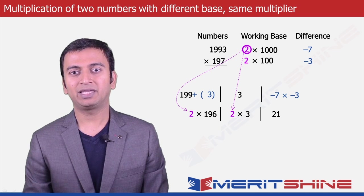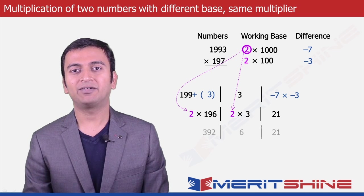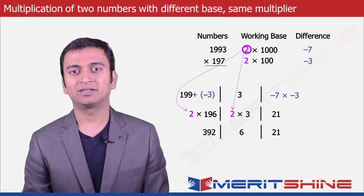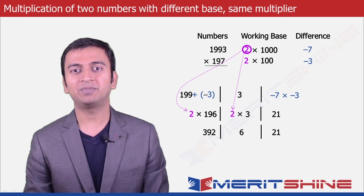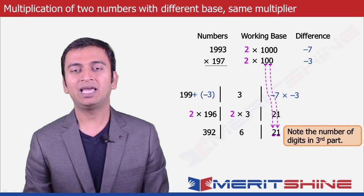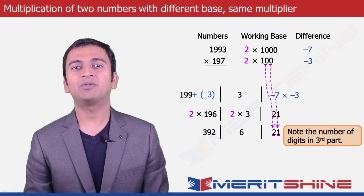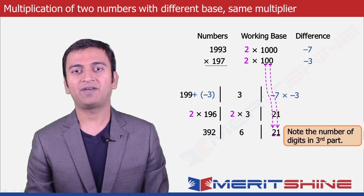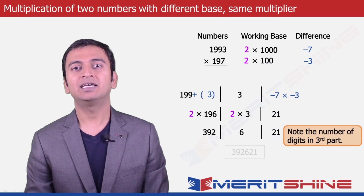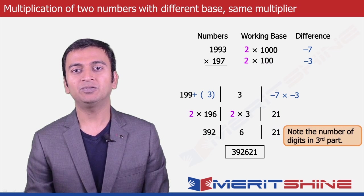We can now club these and get our final answer. Note that the third part will have as many digits as the number of zeros in the base of the smaller number. So our final answer is 392,621.